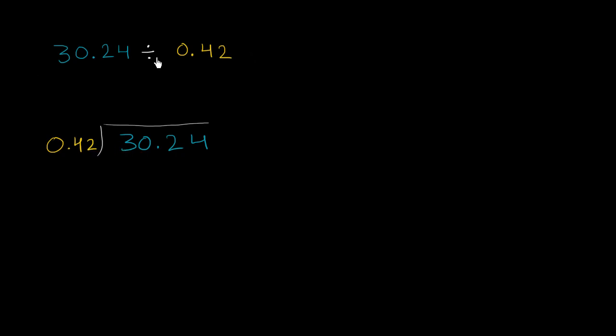And to understand that, we could rewrite this division as 30.42 over 0.42. We could write it really as a fraction. And we know that when we have a fraction like this, we're not changing the value of the fraction if we multiply the numerator and the denominator by the same quantity.